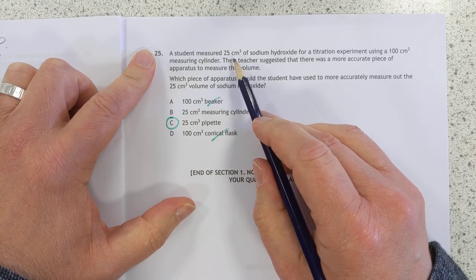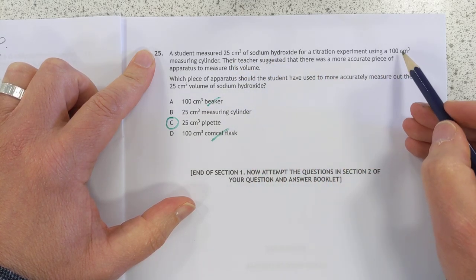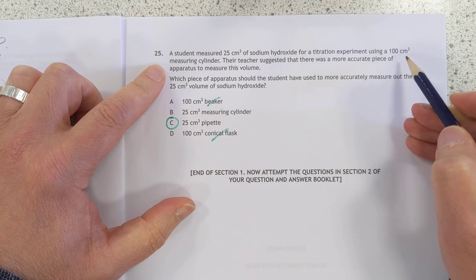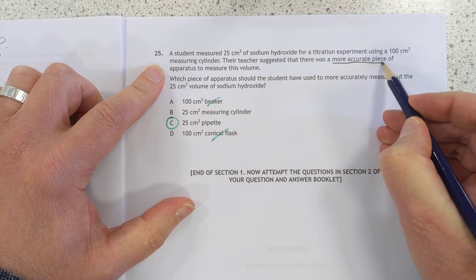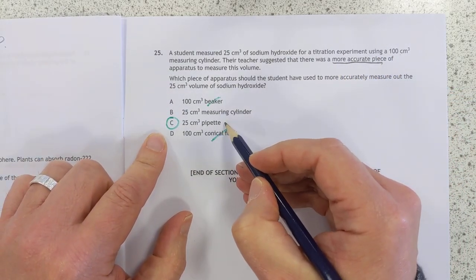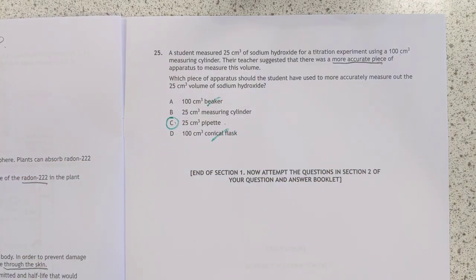25 minutes. It's 25 centimeters cubed sodium hydroxide in a 100 mil measuring cylinder. Yeah, it's okay for accuracy. But if you want a more accurate piece of equipment, you're talking about using a pipette. Thanks for listening folks. Bye-bye.